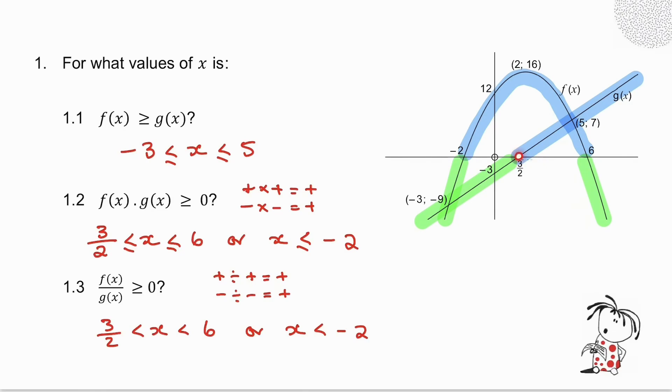Well, if I take when x is 3 over 2, g(x) is equal to 0. Now, I may not divide by 0, so x is not allowed to be equal to 3 over 2. What about 6? Well, f(x) is 0, and that's fine, because if f(x) is 0, I can have 0 at the top of a fraction. What about the minus 2? That's also fine, because that also belongs to f(x). So in 1.3, I can include the 6 and the minus 2, but I may not include the 3 over 2 because I may not have division by 0.